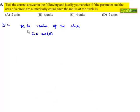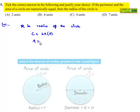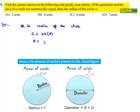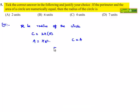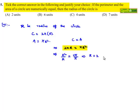The area of the circle A = πr². It is given that the circumference equals the area numerically, so 2πr = πr², which implies r²/r = 2π/π, giving r = 2 units. Therefore, option A is the right answer.